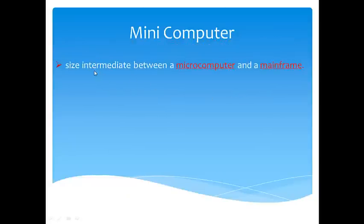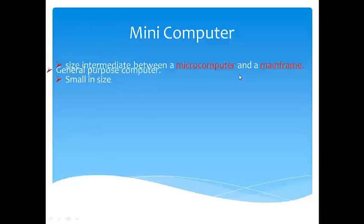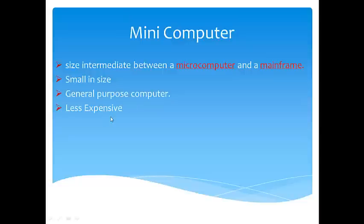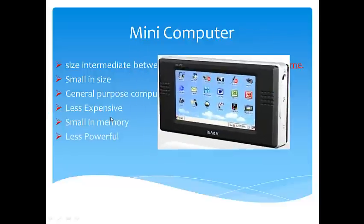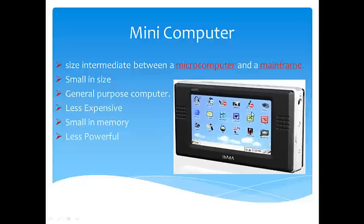Next comes the mini computer. The size is intermediate between a microcomputer and a mainframe. Mini computers are small in size and are general-purpose computers used in home, office, etc. This mini computer is very less expensive, small in size, and small in memory. The processing speed of the mini computer is very, very low, with small processing power and low processor speed.